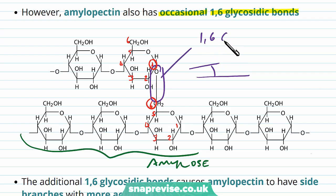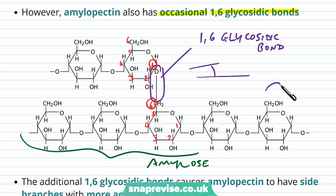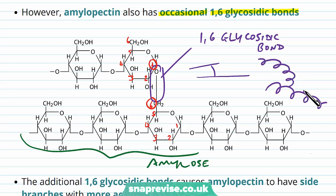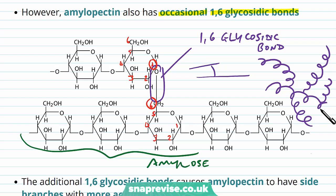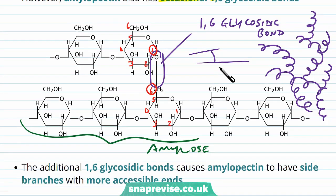This is the 1,6 glycosidic bond, and what it does is create branch points. If you imagine the amylose chain doing the slinky shape, when there's a branch point it connects to another slinky chain. Every time there's a branch, it connects to another amylose chain. So you've got branches of slinkies going off the main slinky, and all of those will have branches too. This is how amylopectin is formed.